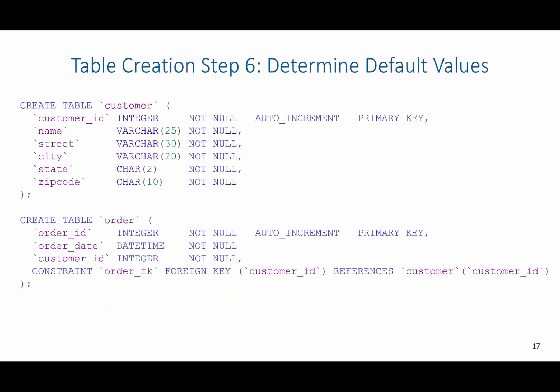For step six, we would want to determine any default values. So if there were any values that I would want to provide, if the user didn't provide a value and it wasn't an auto incrementing column, I could do so by using the keyword default.